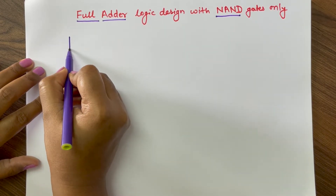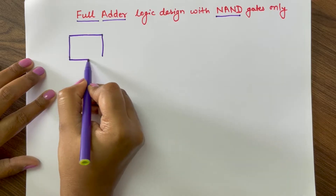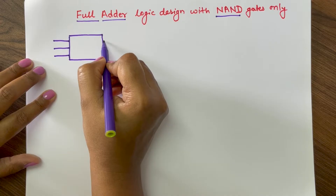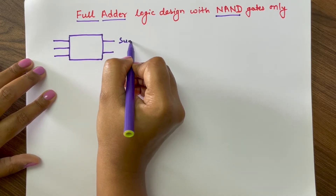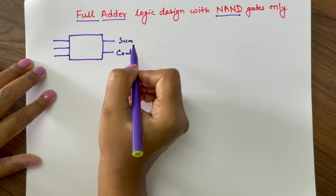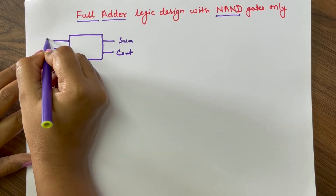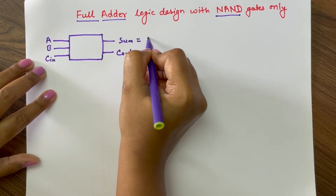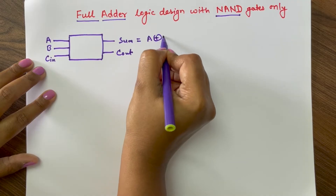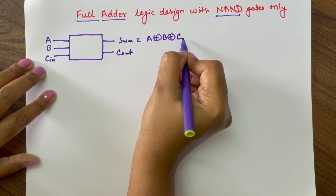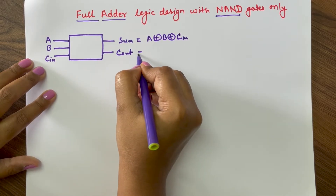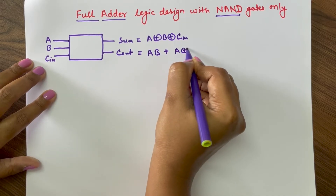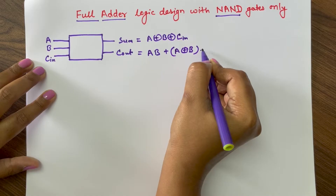A full adder is a combinational circuit that adds three one-bit numbers and gives output as sum and carry out. Let us say these three one-bit numbers are A, B and C_in. So sum will be A XOR B XOR C_in, and carry out will be A·B plus (A XOR B)·C_in.